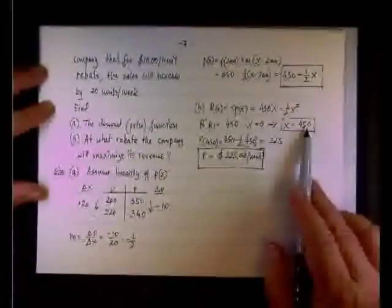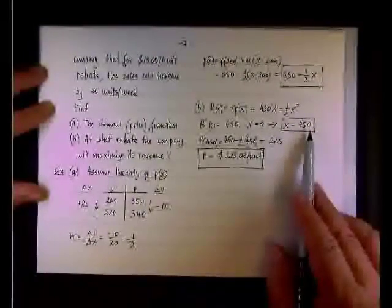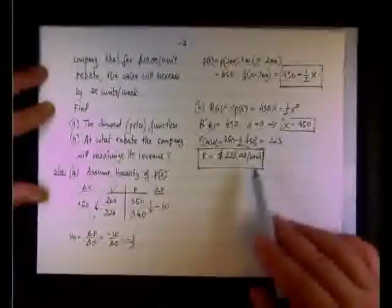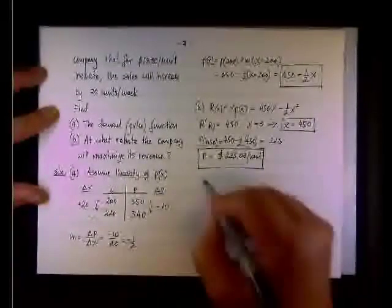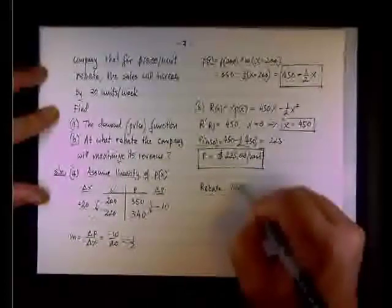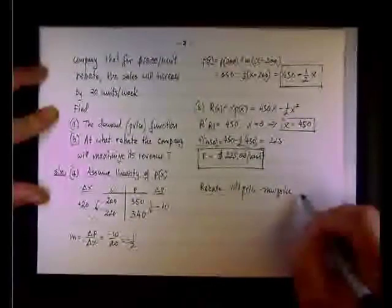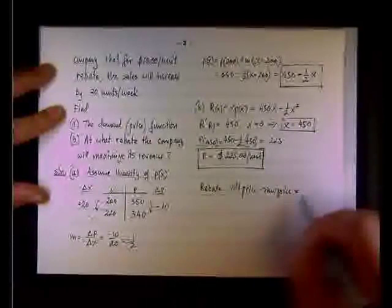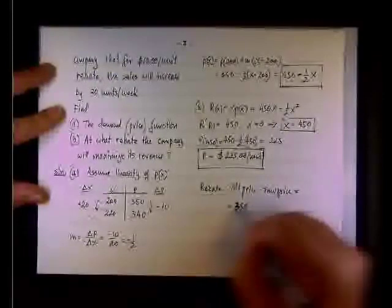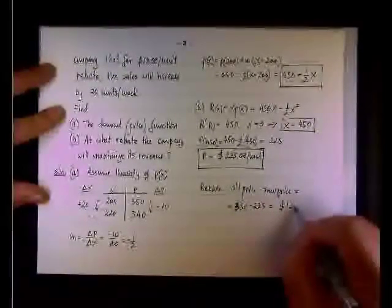Notice what happened. We from 200 units we jumped to 450 units, more than double the quantity, by reducing the price. The rebate itself is old price minus new price, so we are looking at 350 minus 225, so the rebate is 125 dollars per unit.